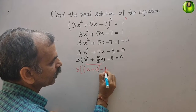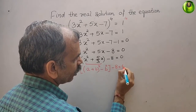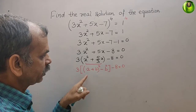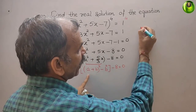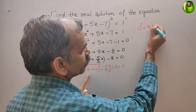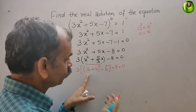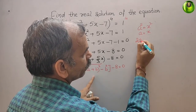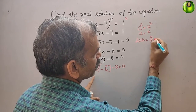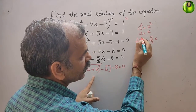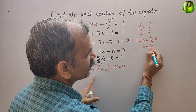We write: 3[(x + b)² - b²] - 8 = 0. Here a² = x², so a = x. And 2ab = 5/3·x, which means b = 5/(2×3) = 5/6.